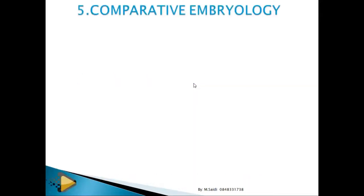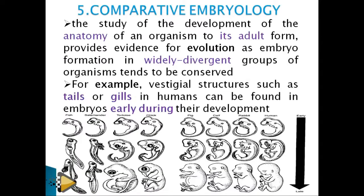Another evidence is comparative embryology, which involves comparing the embryos of different organisms. If you look at embryos of different animals with their labels covered, you cannot tell which is human, rabbit, cow, or pig — they look almost identical. This means these organisms have a common ancestor.